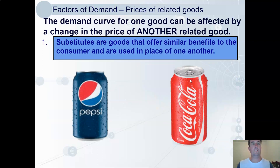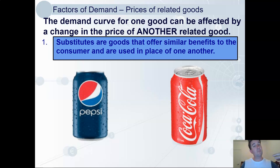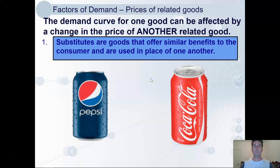The second factor: price of related goods. Demand can be affected by the price of another related good — not the price of the good itself. One way is if the goods are substitutes, like Coke and Pepsi. If the price of Pepsi increases, it makes sense that more consumers will demand Coke, shifting its demand curve to the right.